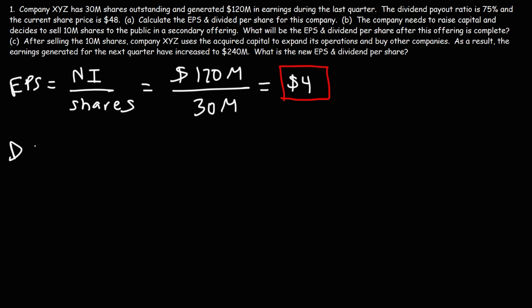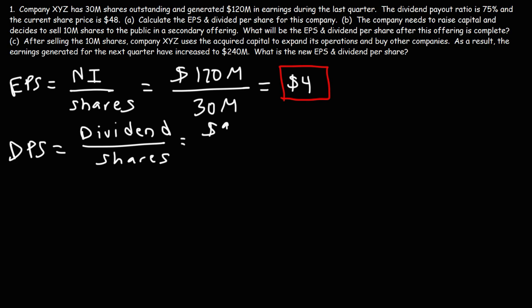Now, to calculate the dividend per share, we need to know how much money they are paying in dividends. The dividend payout ratio of 75% means that 75% of the earnings is distributed to shareholders in the form of dividends; the other 25% is retained by the company. So 75% of $120 million is $120 million × 0.75, which gives you $90 million. The dividend per share is the total dividends paid divided by the number of shares outstanding — $90 million divided by 30 million shares — so the dividend per share is $3 per share.